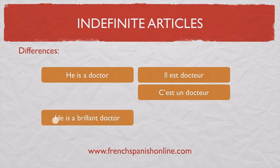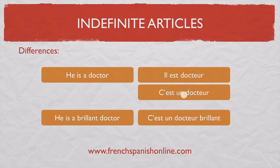When you have an adjective — 'He is a brilliant doctor' — in French we can't use the pronoun 'il'; we must use 'c'est', and of course we need the indefinite article: 'C'est un docteur brillant.'